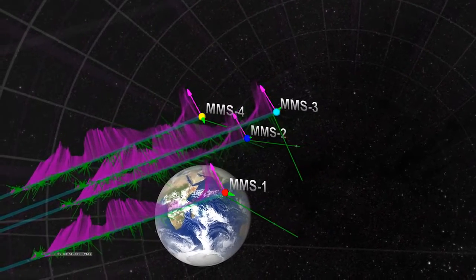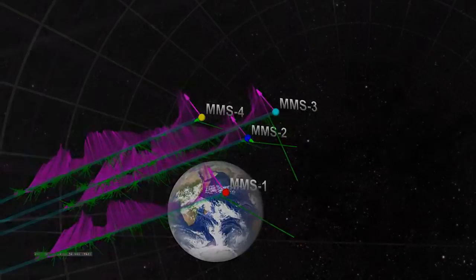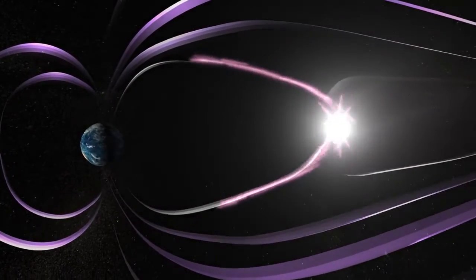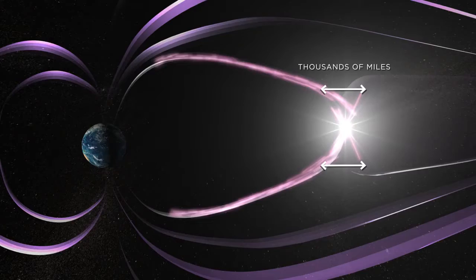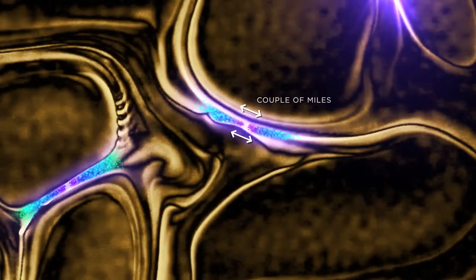But these signatures don't look like standard reconnection. Compared to standard reconnection that occurs over tens of thousands of miles, this new magnetic reconnection spans only a couple of miles within turbulent plasma.